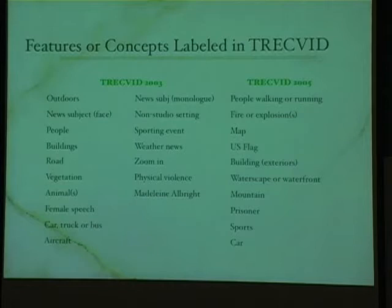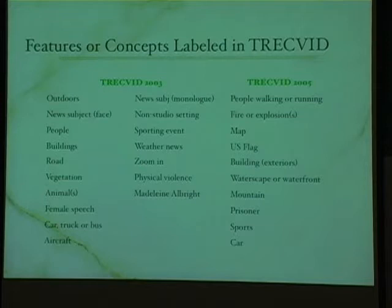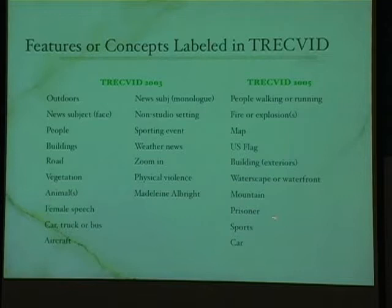These are typical queries used in the high-level feature detection task. In 2003, they had things like 'new subject phase' — I have no idea how they expected the image to tell you which is which. In 2005, they revised the concept list: things like sports in progress, views of mountains, water skies, and so on. This is a typical inventory of features you want to detect.